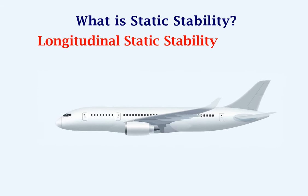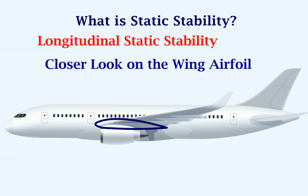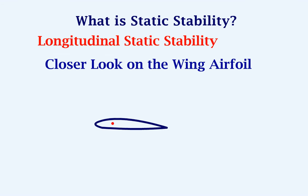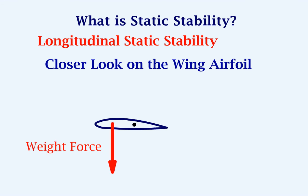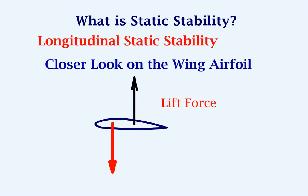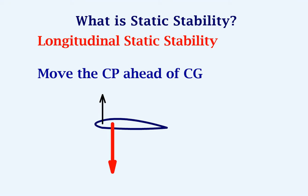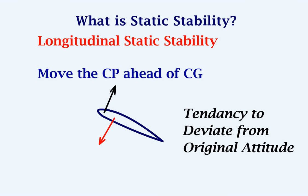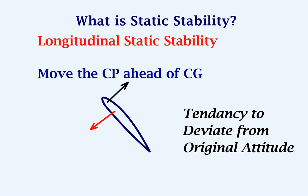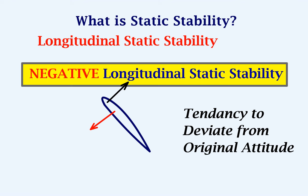To understand longitudinal stability we will take a closer look at the wing airfoil. On the airfoil there is a point called the center of gravity or CG, and another point called the center of pressure or CP. At the CG, the aircraft's weight force acts downwards and this is a fixed point. At the CP, the lift force of the wing acts and this point moves based on the lift. If the CP is ahead of the CG and there is a pitch disturbance, the aircraft will tend to deviate from its original attitude, resulting in negative longitudinal static stability.